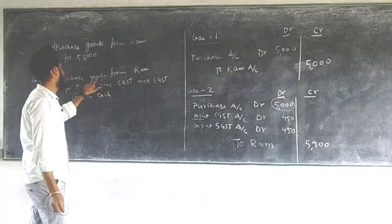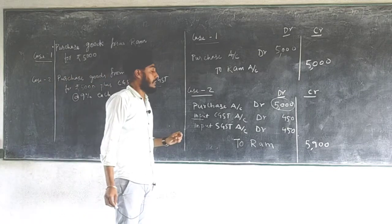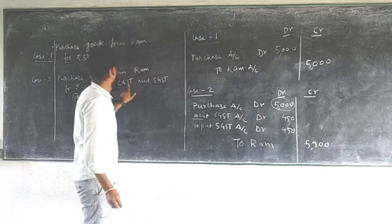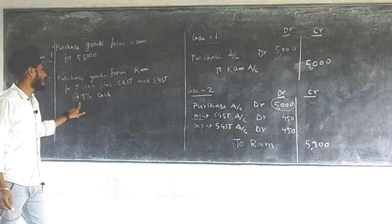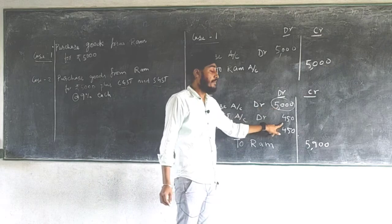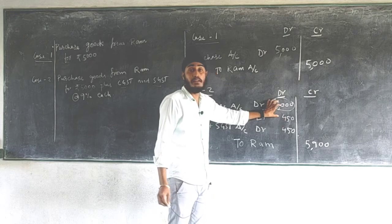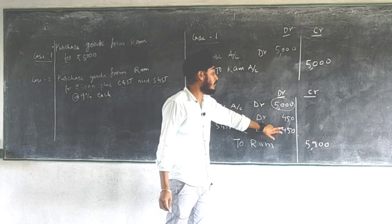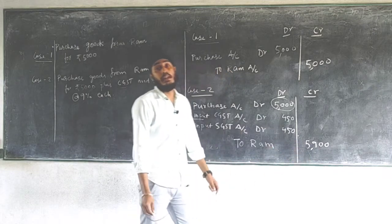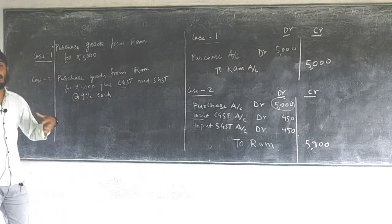We need to add CGST and SGST to the purchase amount. CGST at 9% of 5000 is 450, and SGST at 9% of 5000 is also 450. So total to Ram Account = 5000 + 450 + 450 = 5900. This is how GST is treated when there is a purchase.